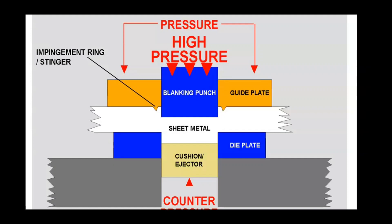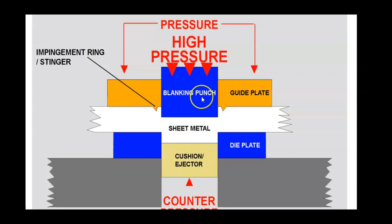Now understand the process of piercing. In the piercing process, the same tooling is used — same punch and die. The sheet metal is kept on the die. The blank holding force keeps the sheet in place. The punch comes from the top, pierces the sheet metal, and a piece is removed. This piece is thrown out as scrap. The leftover sheet metal with the hole is taken as the product. This process is called the piercing or punching process.